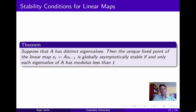Although this result only applies to linear systems, it's actually extremely useful even for the study of nonlinear systems, because as we'll see later in the course, the stability of a fixed point of a nonlinear system can be analyzed by finding a linear system that is topologically conjugate to the nonlinear system in a neighborhood of that fixed point. But we'll get to that later.